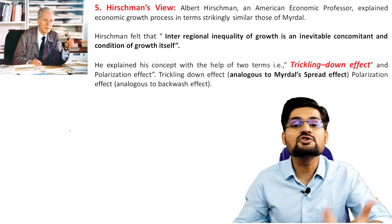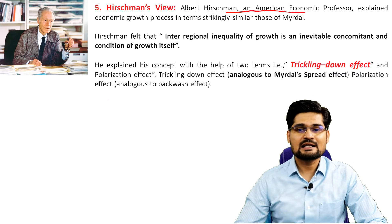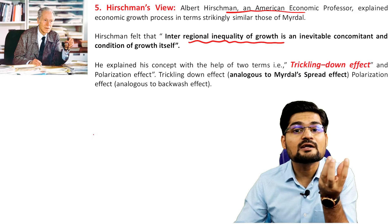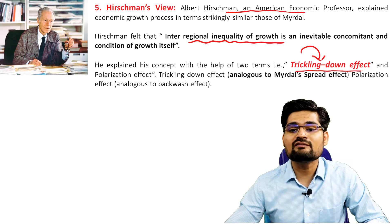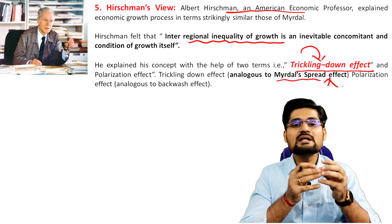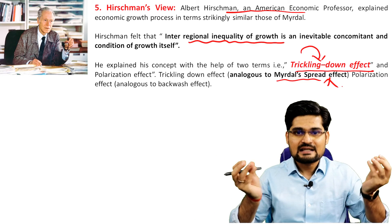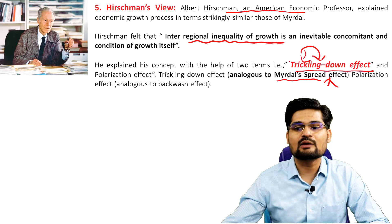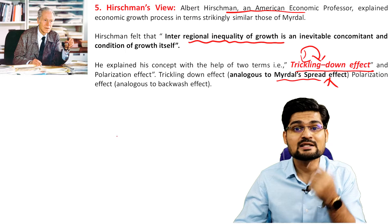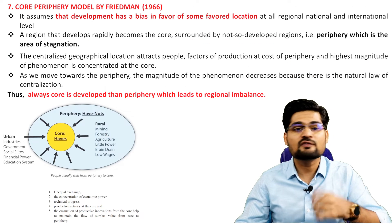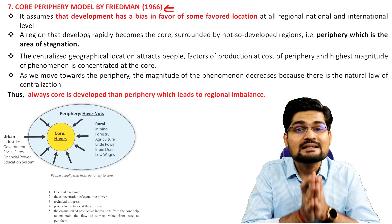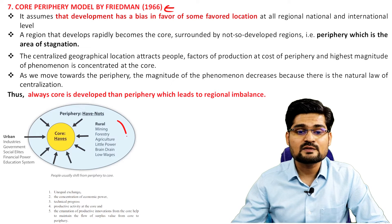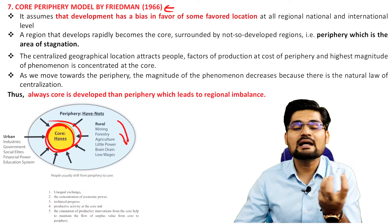Professor Albert Hirschman, an American economics professor, argued that inter-regional inequality of growth is inevitable because of the growth conditions in a particular location. He says that gradually a trickling-down effect will happen, which is very analogous to Myrdal's spread effect — development will trickle down to the surroundings. First, development happens at a particular location because of cumulative factors and then spreads outward. This polarized growth is mostly observable in developing countries.